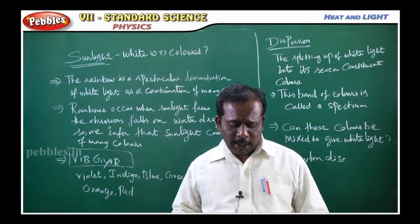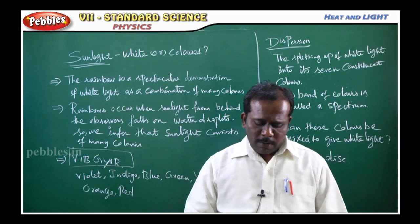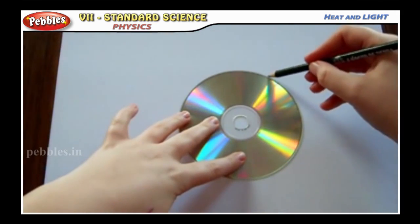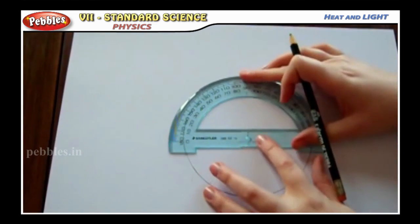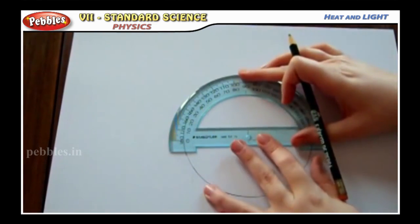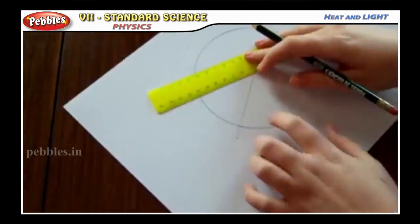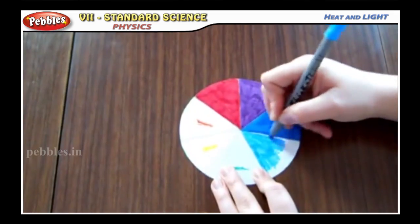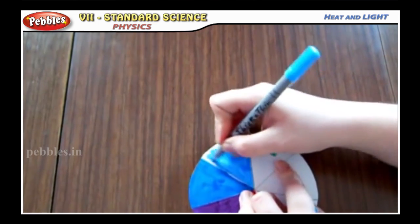Experiment 4.12: Let us make a Newton disc. Cut out a disc from white cardboard. Using a protractor, divide the disc into 7 equal sections. Paint or color each section with any one of the 7 colors of the spectrum.